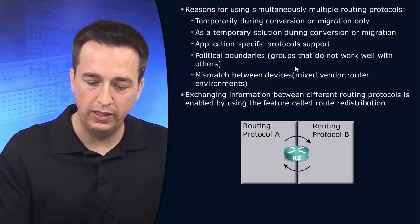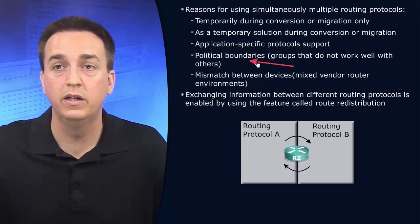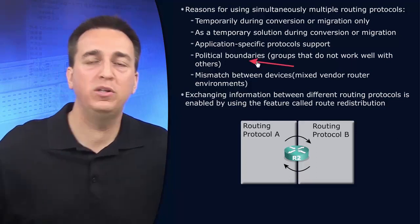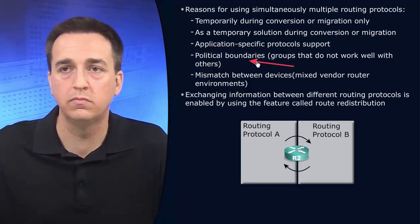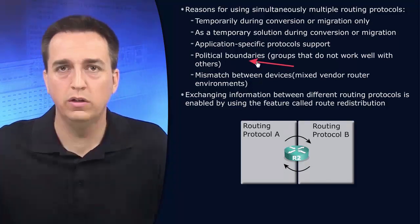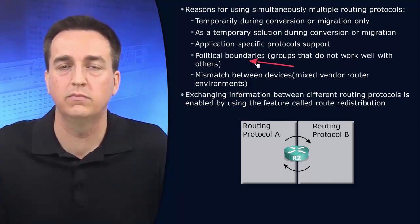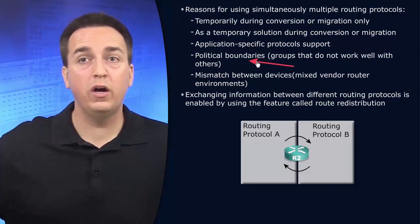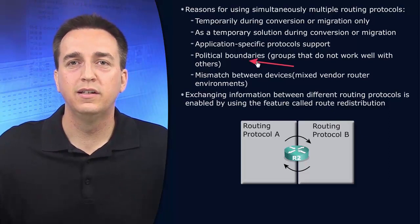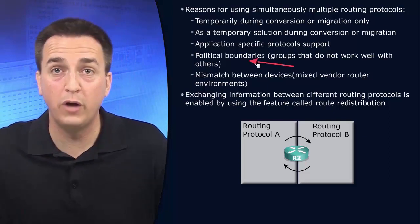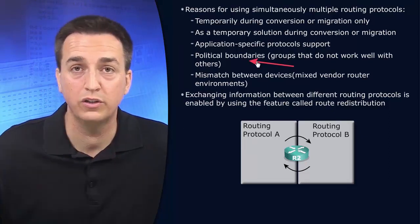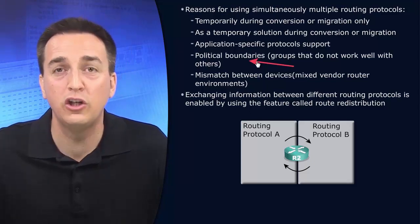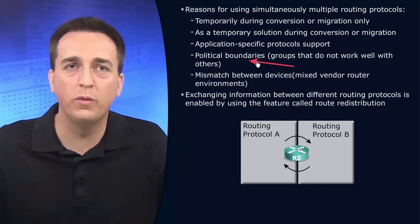It might be because of political reasons. The country you are in might not support or allow that particular routing protocol to be run. They might have strict guidelines that say no proprietary protocols — they have to be open standards. In that case, you might be running in your branch office one routing protocol, that proprietary routing protocol, and in headquarters you might be running the open standard, or vice versa. And in order to share the information between those two sites, you'll have to perform redistribution.